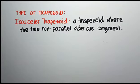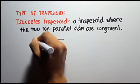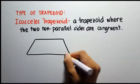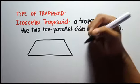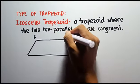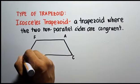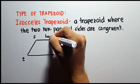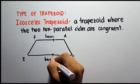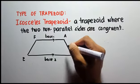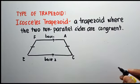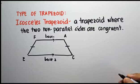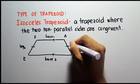Types of trapezoid: we have the isosceles trapezoid. An isosceles trapezoid is a trapezoid where the two non-parallel sides are congruent. If we draw trapezoid FACE, the parallel sides are base one and base two, and the two non-parallel sides are congruent — they have the same measurement. These two non-parallel sides are called legs: leg one and leg two.